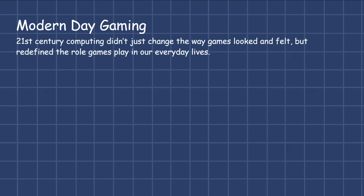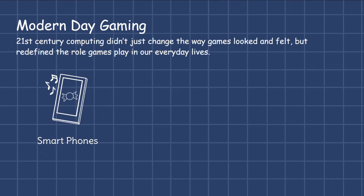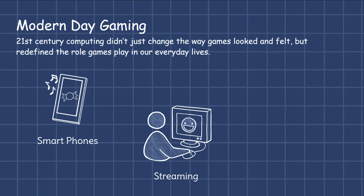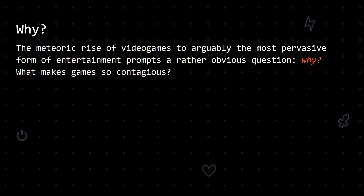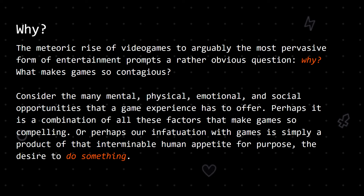21st century computing didn't just change the way games looked and felt, but redefined the role games play in our everyday lives. Smartphones and other mobile devices have rendered games ubiquitous, playable anywhere and anytime. Streaming has brought video games on par with traditional sports in terms of viewership, and virtual reality has finally established a footing as a platform in its own right. The meteoric rise of video games to arguably the most pervasive form of entertainment prompts a rather obvious question: why? What makes games so contagious? Consider the many mental, physical, emotional, and social opportunities that a game experience has to offer. Perhaps it is a combination of all these factors — or simply a product of that human appetite for purpose — the desire to do something.